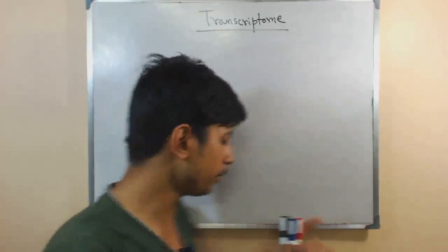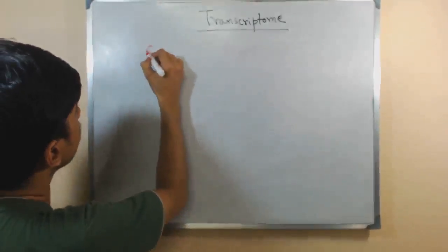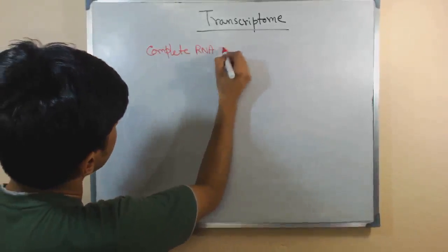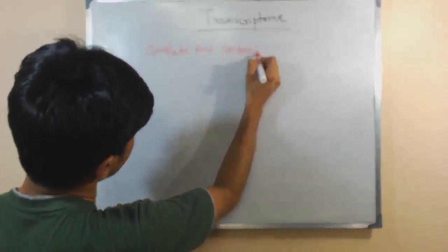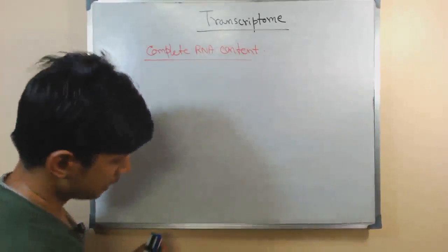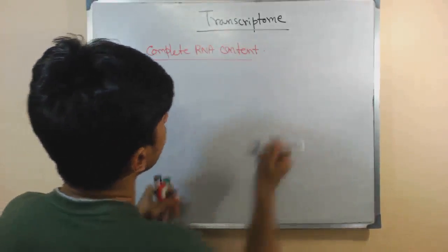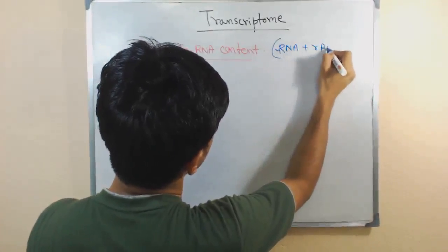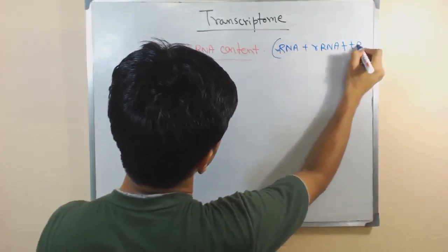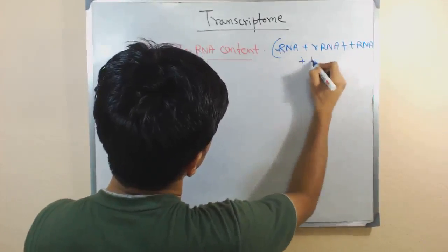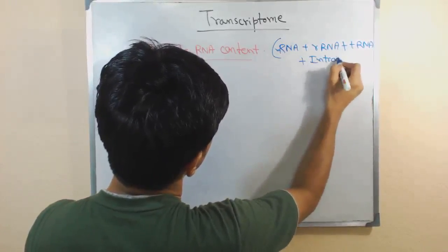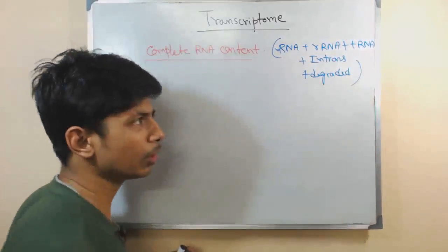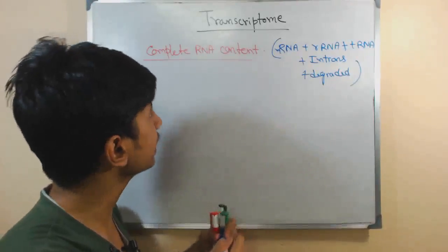Why is transcriptome important? Transcriptome means the complete RNA content at a given time. It includes everything — coding RNA like mRNA, rRNA, tRNA, including the non-coding parts which are introns, the non-coding parts, the degraded RNAs, and so on. All the contents of RNA are there.